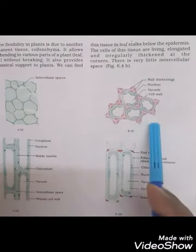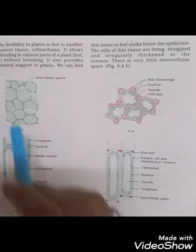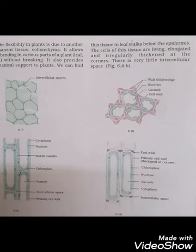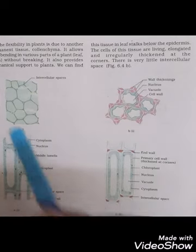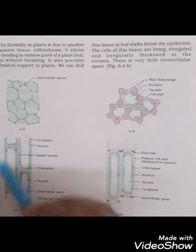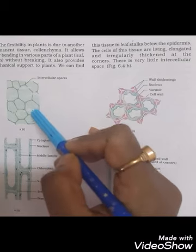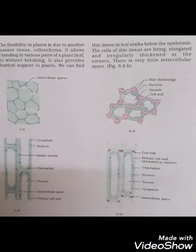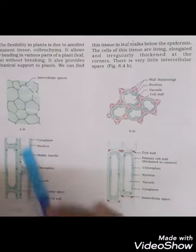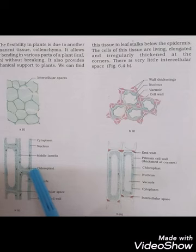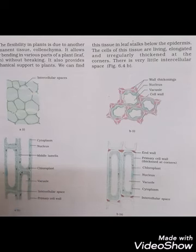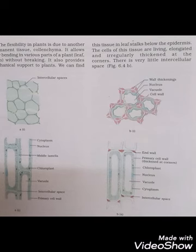In comparison, figure A shows parenchyma — both a transverse section and a longitudinal section. You can clearly see the intercellular spaces between the parenchyma cells. In the longitudinal section you can see the cytoplasm, nucleus, middle lamella, chloroplasts, vacuole, intercellular spaces, and the primary cell wall. These structures are important for you to understand and practice at home.